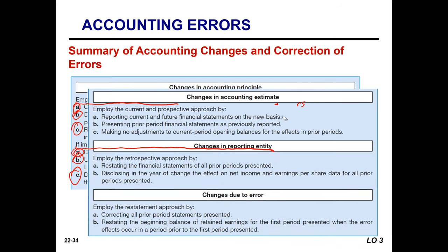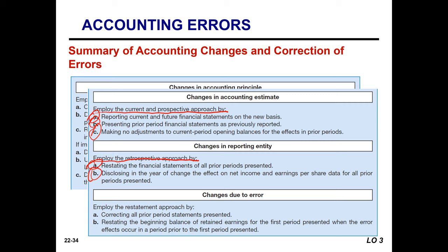Changes in accounting estimates: employ the current and prospective approach by reporting current and future financial statements on the new basis, presenting prior period financial statements as previously reported, and making no adjustments to current period opening balances for effects in prior periods. Changes in reporting entity: employ the retrospective approach by restating financial statements of all prior periods presented and disclosing in the year of the change the effect on net income and earnings per share for all prior periods. Changes due to error: employ the restatement approach by correcting all prior period statements presented, or restating the beginning balance of retained earnings for the first period presented when the error occurred prior to that first period.